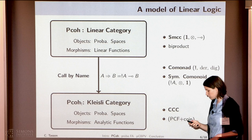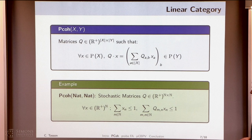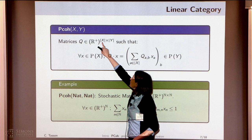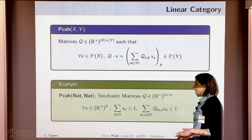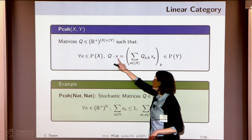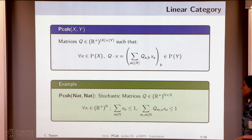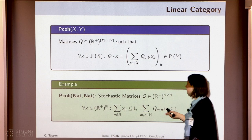Let's move into details of the linear category. Morphisms will be matrices indexed by the indices of the input and the indices of the output. What we ask is that these matrices are operators that preserve probabilistic spaces — this is just the matrix product. For instance, if we look at morphisms from Nat to Nat, we will get stochastic matrices just by applying this definition.